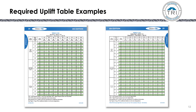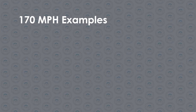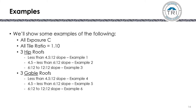Here are what the Table 2s look like. On page 26, you'll find Table 2HC for hip roofs in Exposure C. Table 2GC is for gable roofs in Exposure C. For our six examples at 170 miles per hour, all will be Exposure C using a high tile ratio of 1.10. We'll do three hip roofs at the three different slopes — less than 4.5:12, 4.5:12 to less than 6:12, and 6:12 to 12:12 — and the same three slopes for the gable roofs.